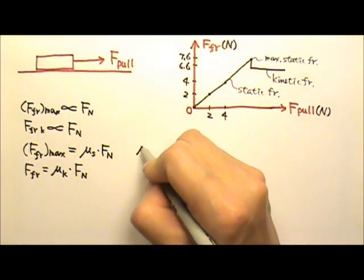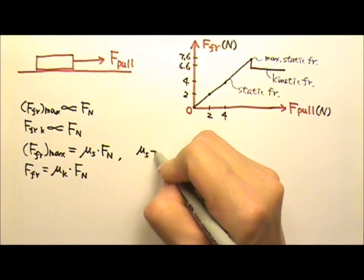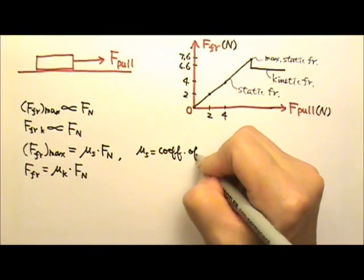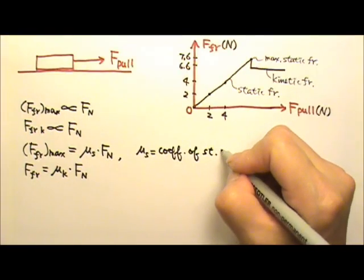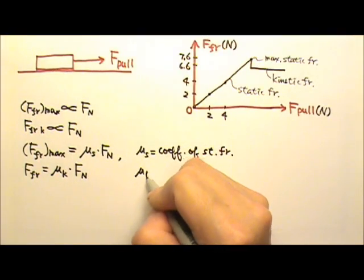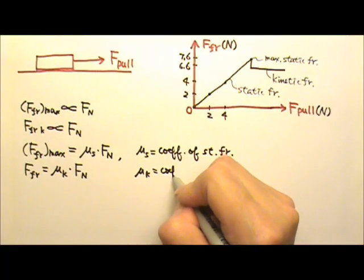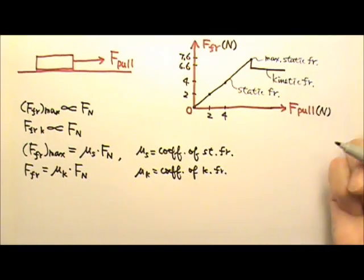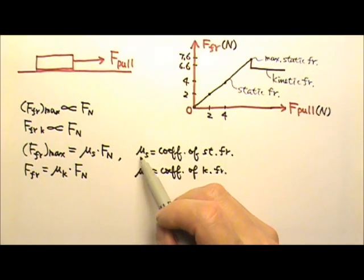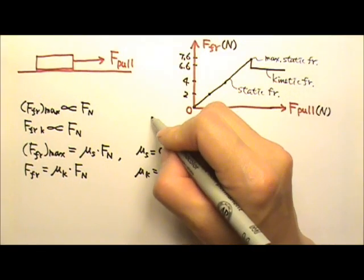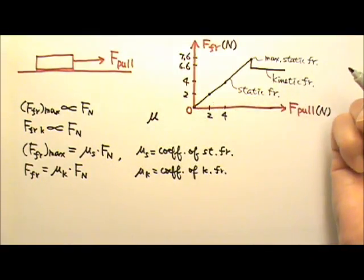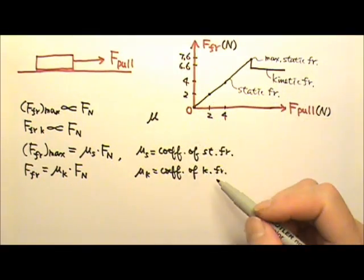μs is called the coefficient of static friction, and μk is called the coefficient of kinetic friction. It's mu, you write it kind of like a lowercase u, just with a long tail in the front. It's a Greek letter mu.